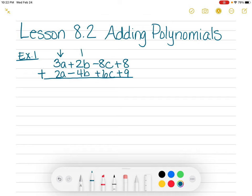So these are all the a's, these are b's and c's and then these are your constants or the ones without variables. So when I add these up, I'm going to get 5a minus 2b minus 2c plus 17. And that's my answer. See how easy that was?